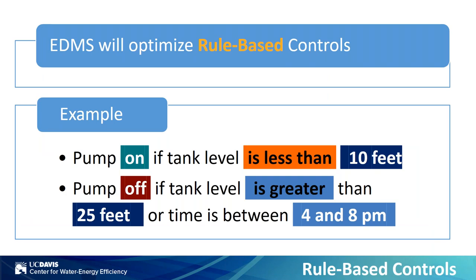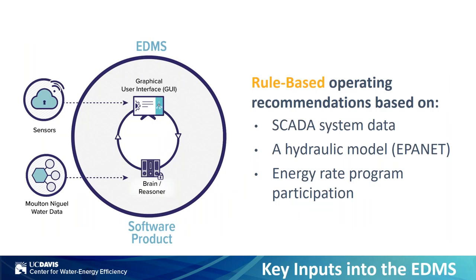So how are operators actually running their systems? They're typically managed using rule-based controls implemented in SCADA and overseen by operators, with day-to-day decisions made on top of that. The effects of these rule-based controls can be easily interpreted by operators, and they are very resilient to varying water customer demands. The EDMS focuses on optimizing these rule-based controls rather than fully relying on pump schedules. An example of a rule-based control would be to turn a pump on if a tank level is less than 10 feet, or to turn that same pump off if a tank level is greater than 25 feet or the time is between 4 and 8 p.m.